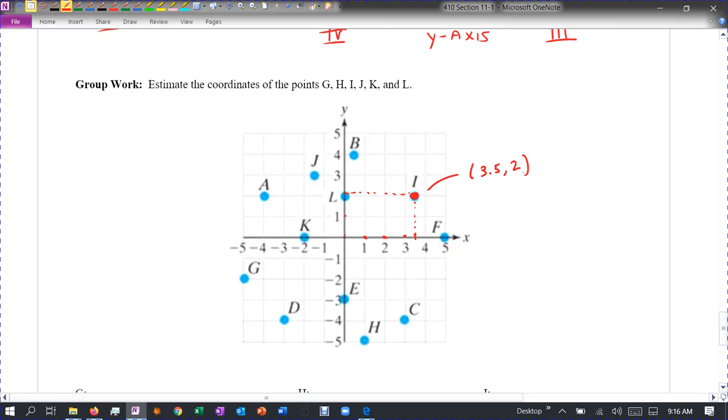Let's do another one. How about D? So to get to D, I'd have to go to the left, three. And then down to negative four. So I would say left three, down four. There we go.